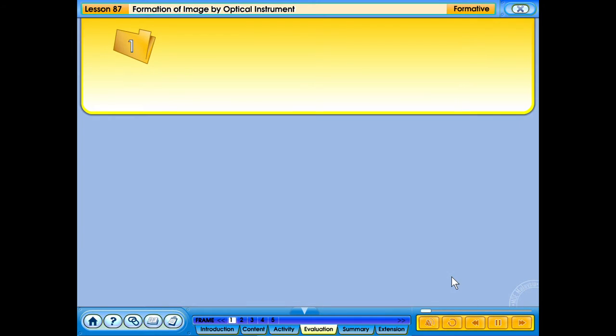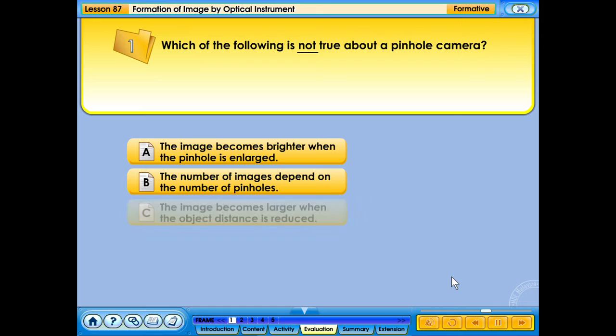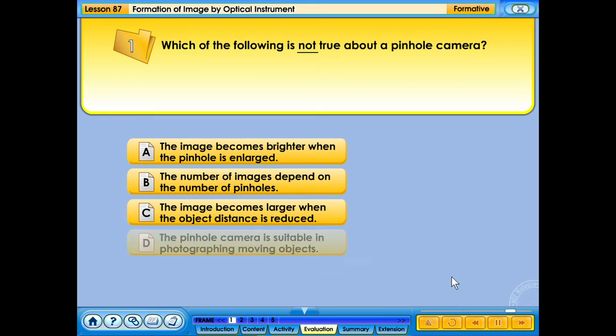Click on the correct answer. Which of the following is not true about a pinhole camera? A. The image becomes brighter when the pinhole is enlarged. B. The number of images depend on the number of pinholes. C. The image becomes larger when the object distance is reduced. D. The pinhole camera is suitable in photographing moving objects. Your answer is correct.